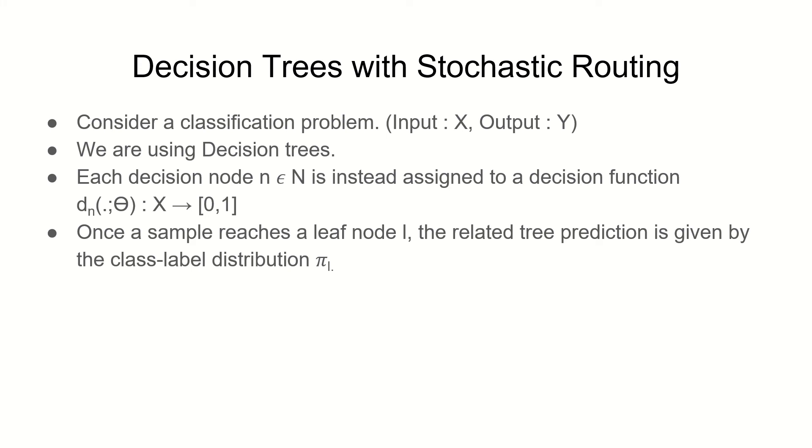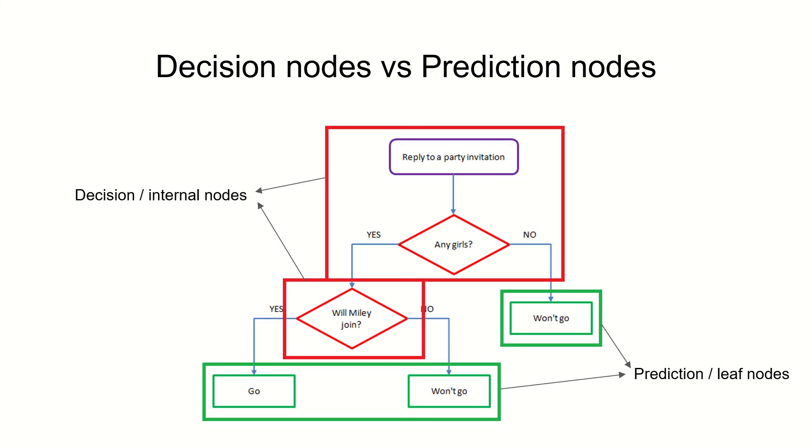Let's dive into the main problem: how do you stochastically route a sample at each node of a decision tree? Assume you have a classification problem and we are going to solve this using decision trees. Decision trees have two types of nodes. All the nodes in the red colored boxes are called decision nodes or internal nodes. All the nodes in the green colored boxes are called prediction nodes or the leaf nodes.